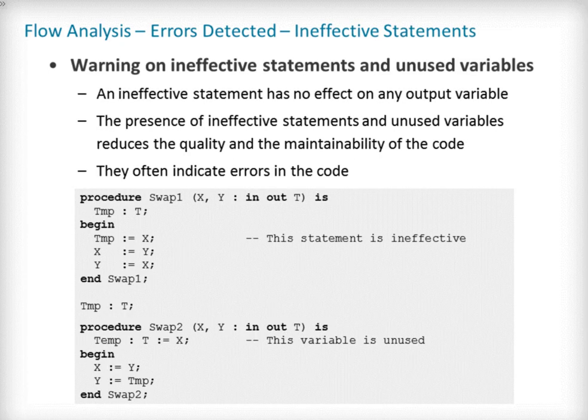Ineffective statements are different from dead code as they are executed, even usually modifying the value of variables. Only, they have no effect on any of the sub-program's outputs, be they parameters, global variables, or function results. Ineffective statements, like unused variables, should be avoided as they make the code less readable and more difficult to maintain. What is more, they are often caused by errors in the program which may be difficult to detect. This is the case in the sub-programs swap1 and swap2 shown on this slide, which do not properly swap their two parameters x and y. Flow analysis warns both on ineffective statements and unused variables.